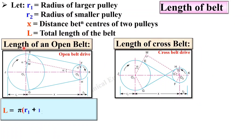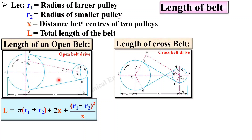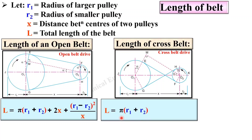In case of open belt drive, this is the formula for the length of belt. You have to remember this equation: π(R1 + R2) + 2x + (R1 − R2)² / x. This is the length of the belt for the open belt drive, and this one is the formula for the length of belt in case of cross belt drive.